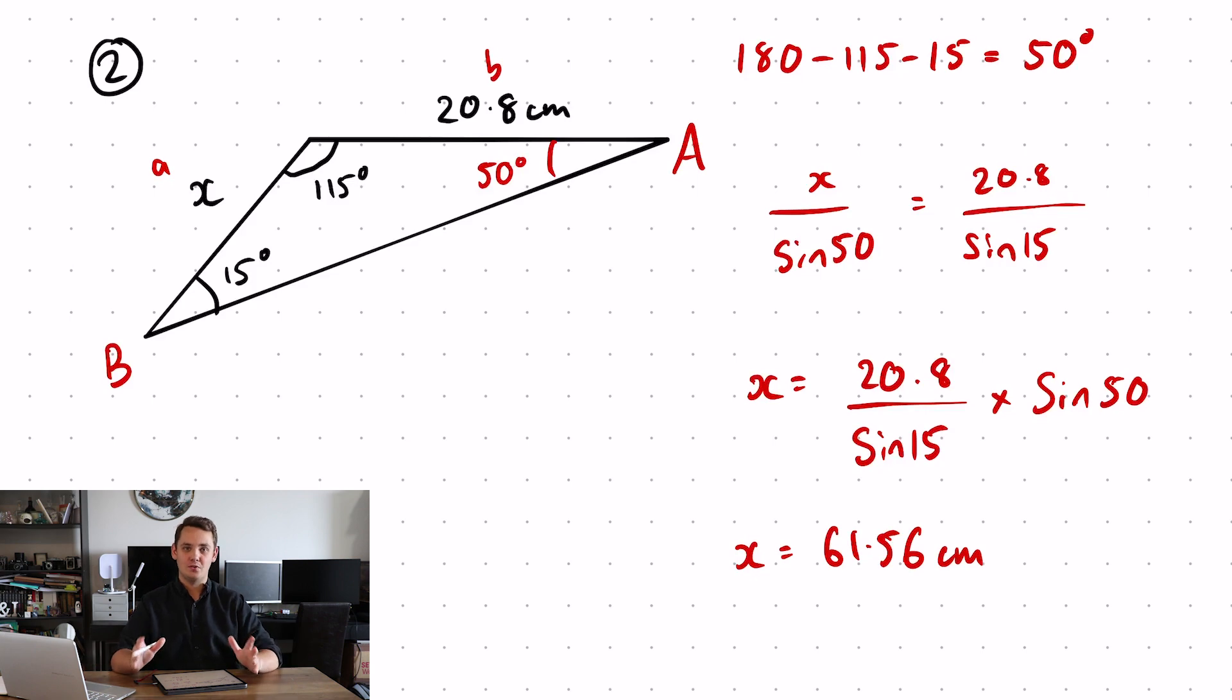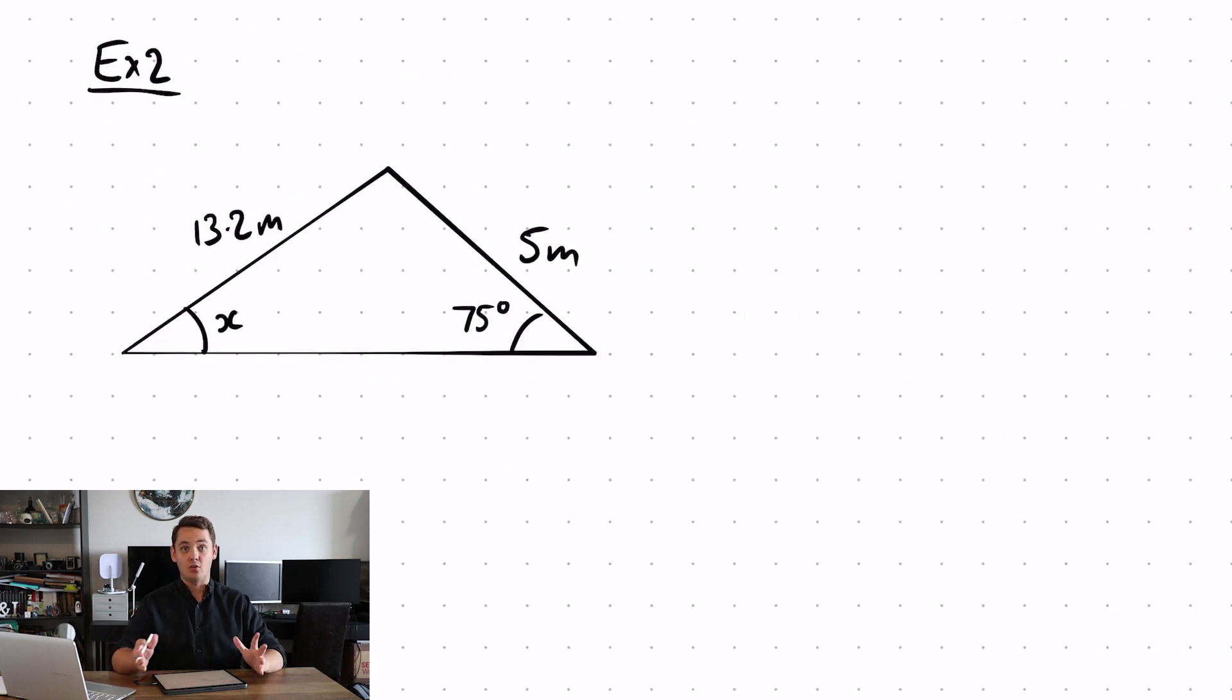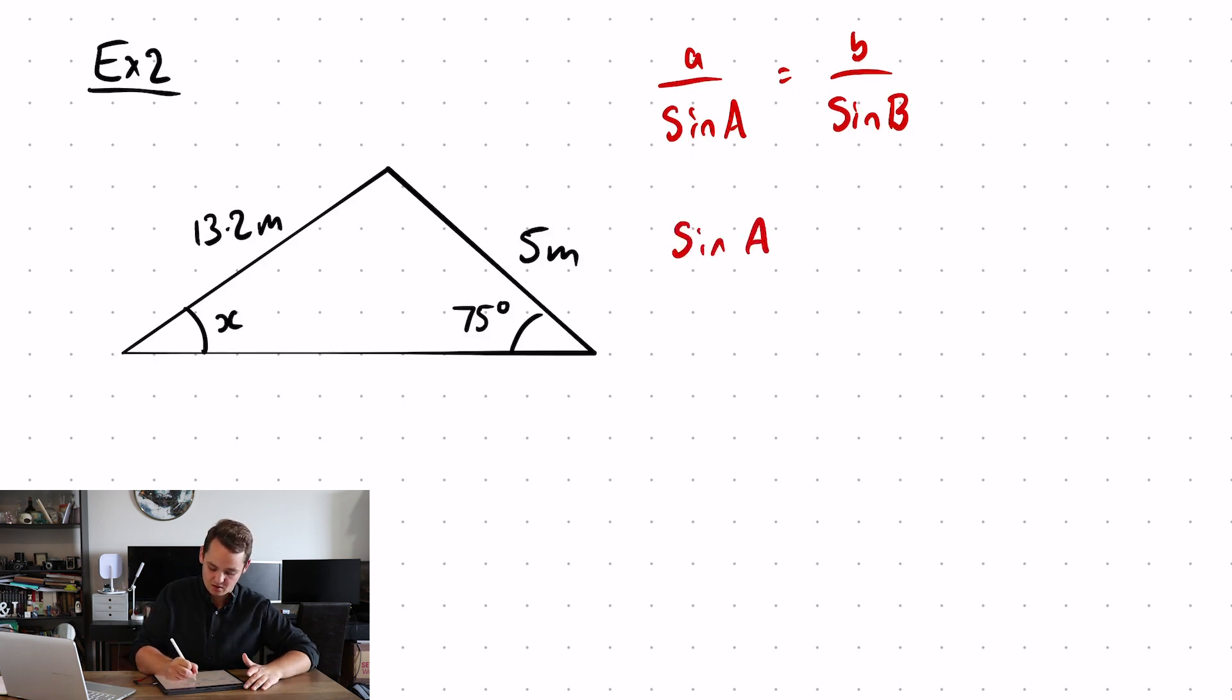Okay, so that's how you use the sine rule to find an unknown length of a side. Now we're going to have a look at how we can use the sine rule to find an unknown angle. When it comes to finding an unknown angle, I like to flip the sine rule upside down. So no longer am I doing a over sine A equals b over sine B. All I'm going to do is flip it upside down to get sine A over a equals sine B over b. This is purely just to make my unknown be on top, which means a little less rearranging when it comes to that stage.